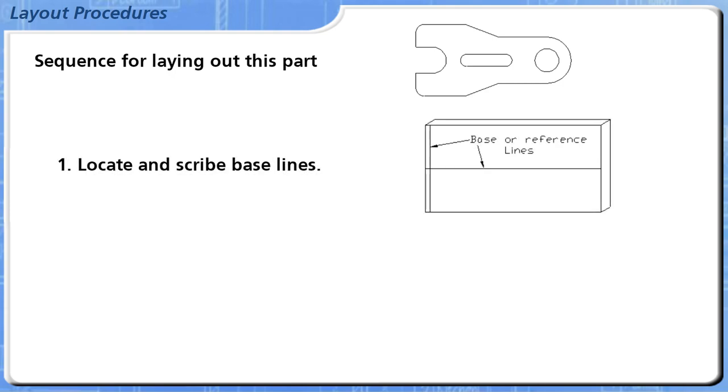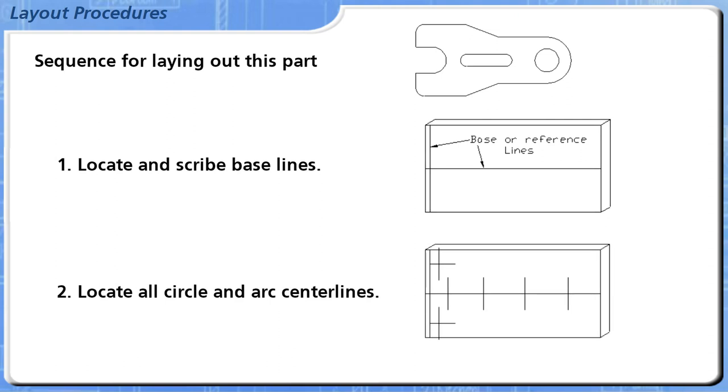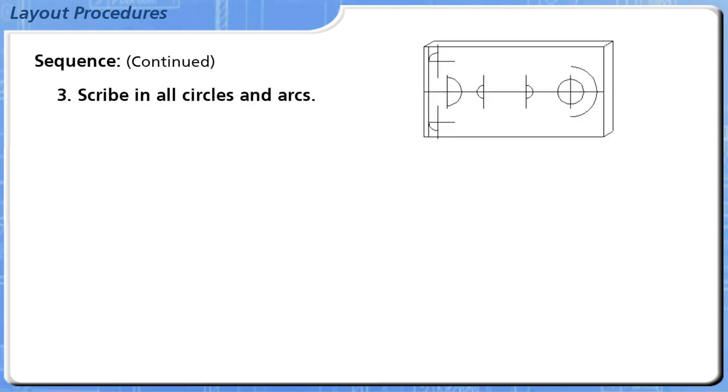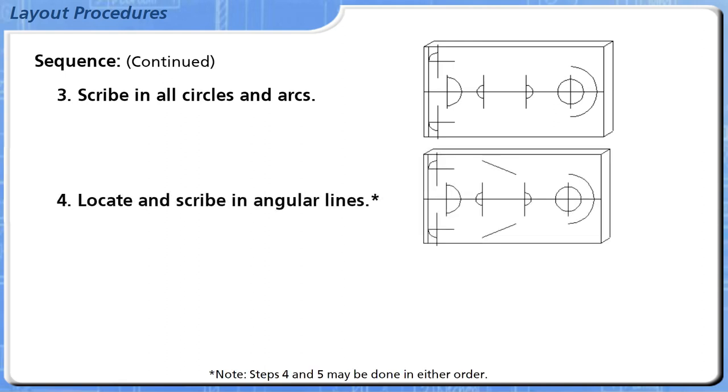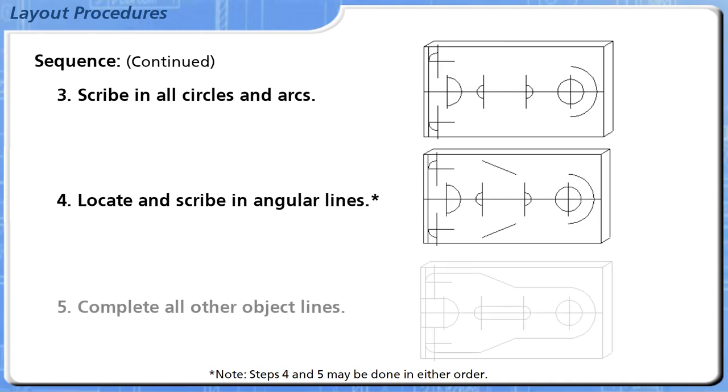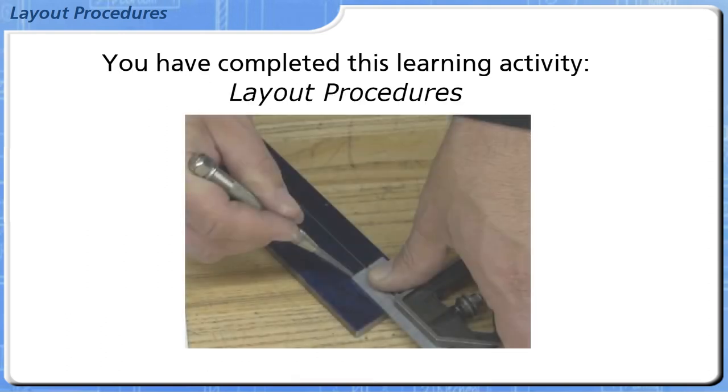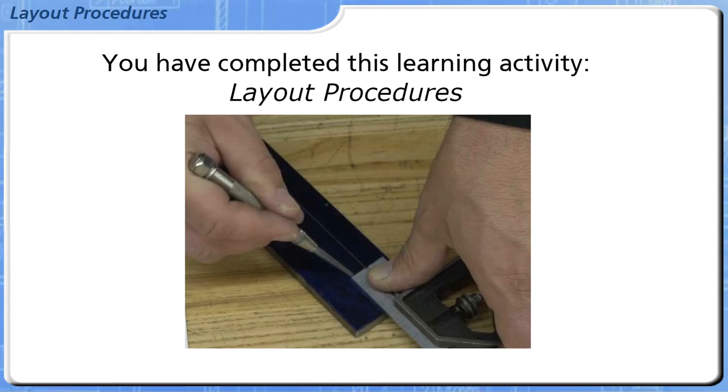First, locate and scribe base lines. Second, locate all circle and arc centerlines. Next, scribe in all circles and arcs. Fourth, locate and scribe in angular lines. Fifth, complete all other object lines. You have completed this module on layout procedures.